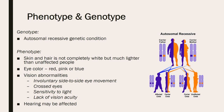Their extremely light skin makes them very sensitive to the sun, so they are susceptible to burning much easier than people who are not affected by albinism. A big risk factor is that they have a higher risk of developing skin cancer due to their skin sensitivity.